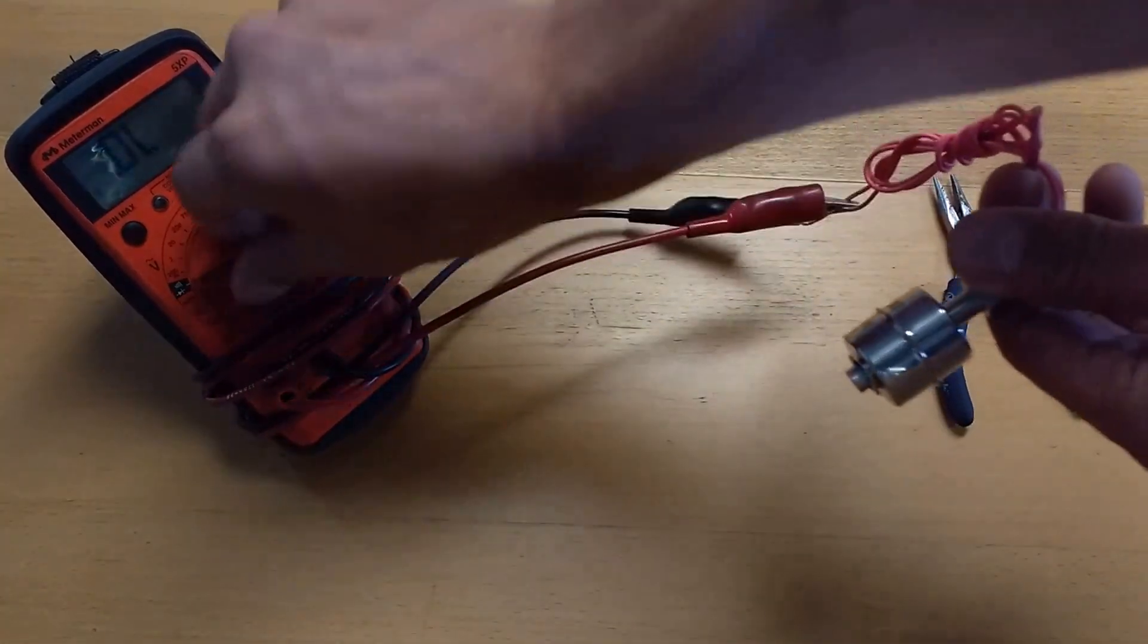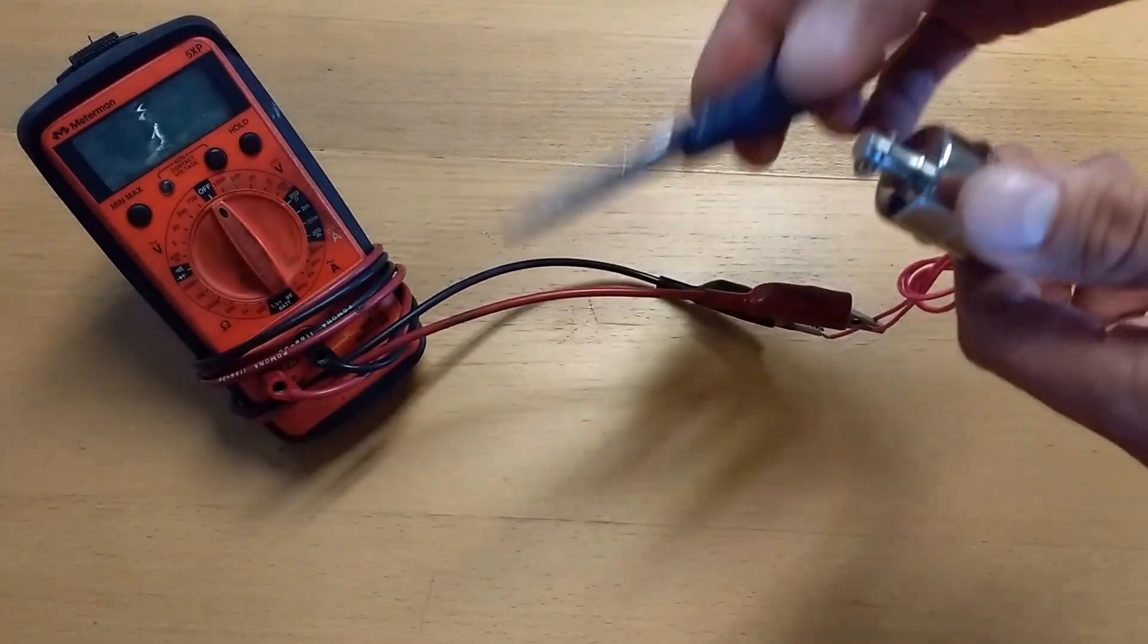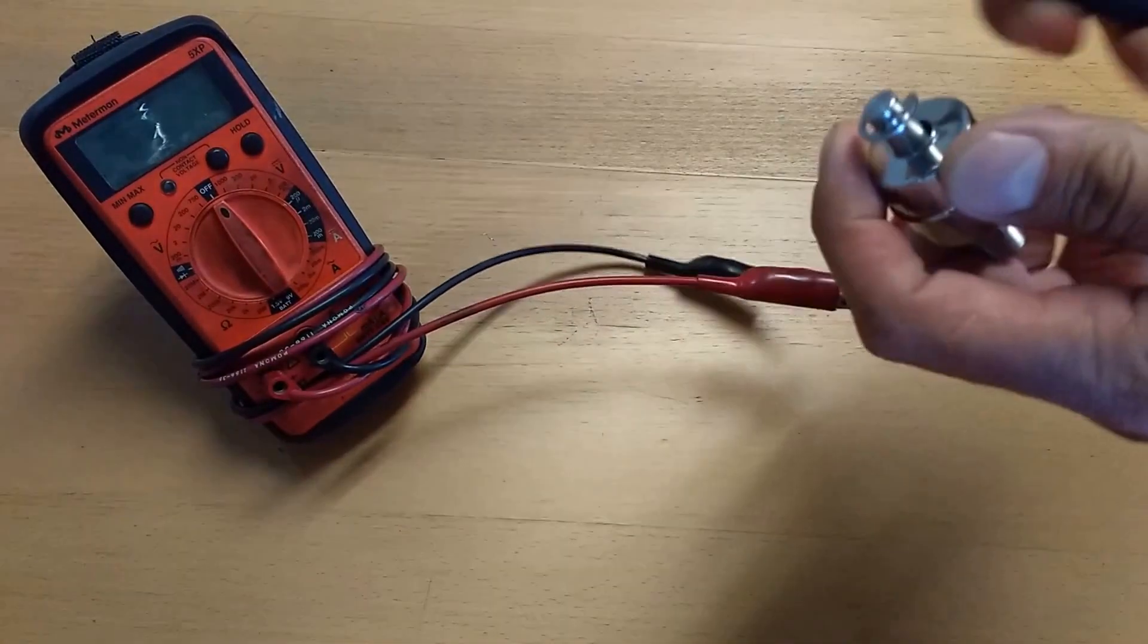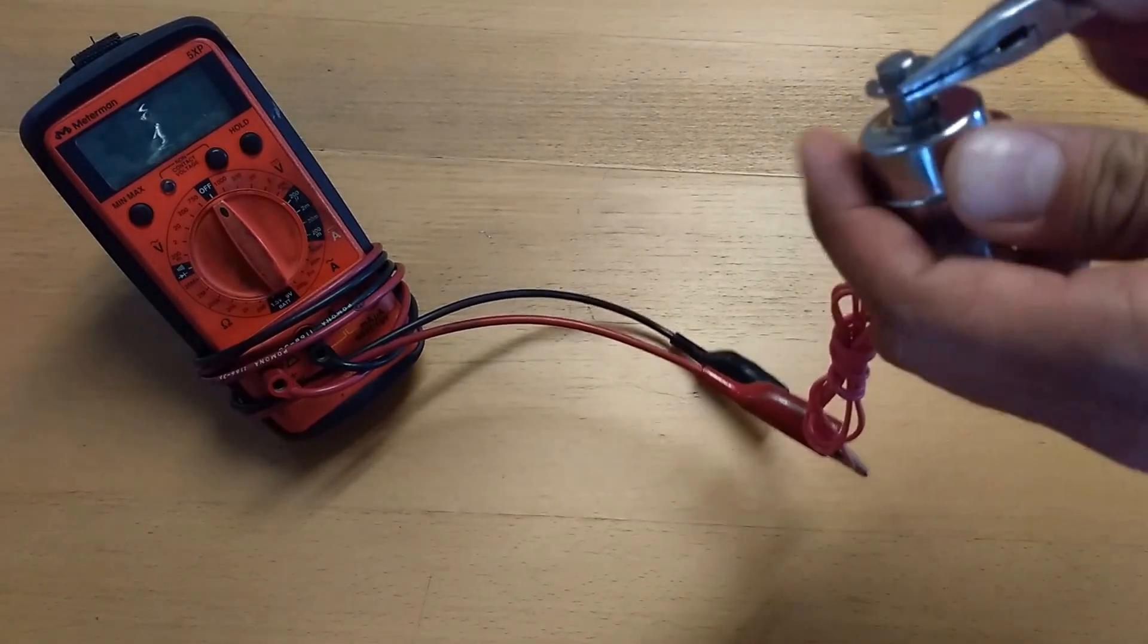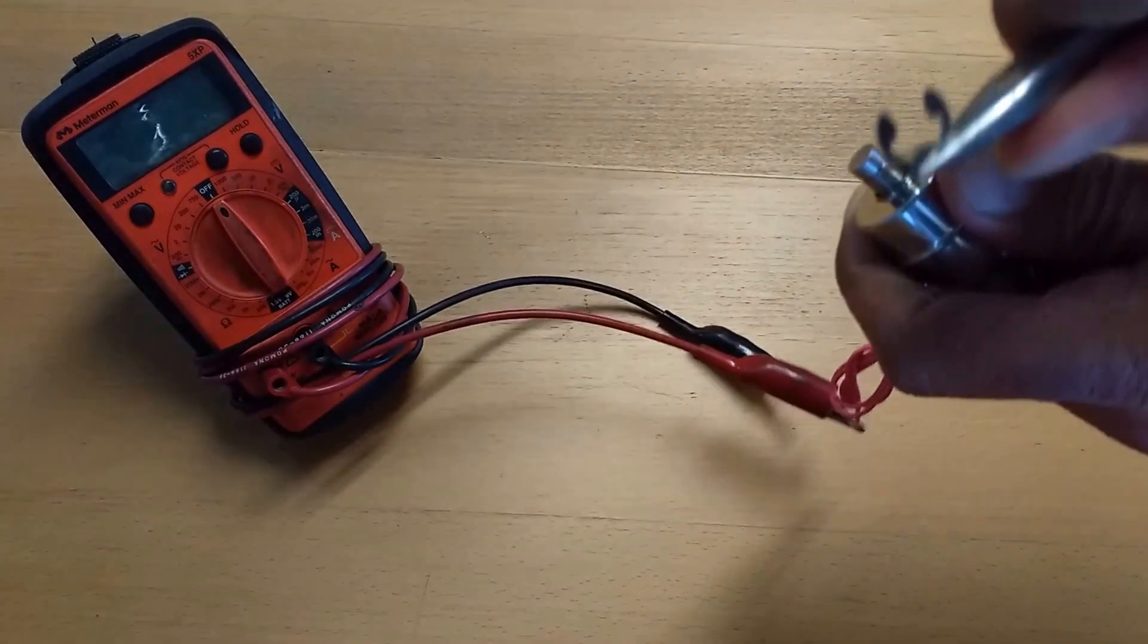So in order to change this float, all we have to do is take our pliers and remove the retaining clip like so.